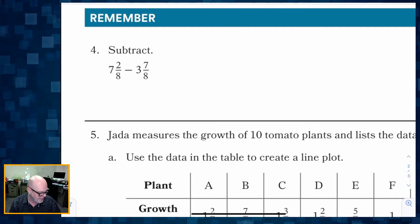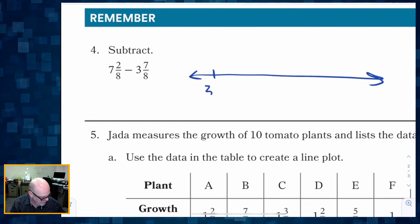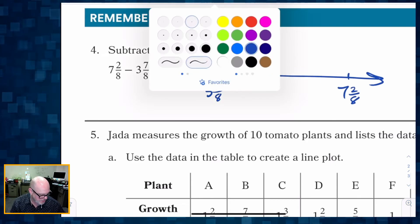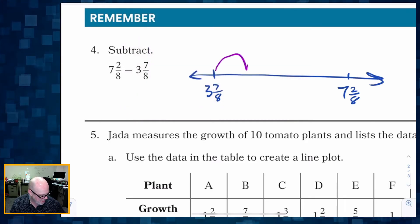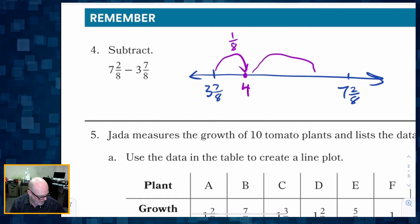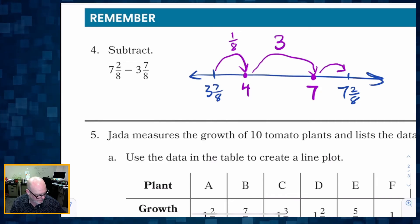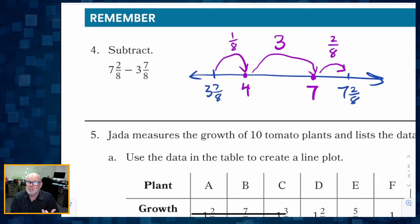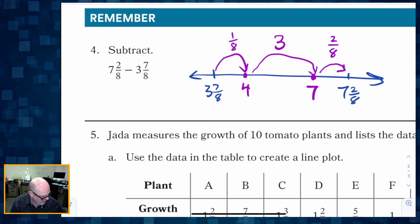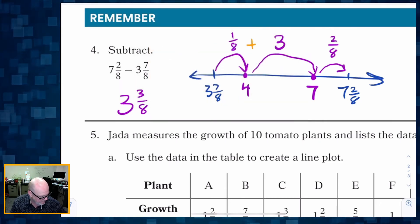Now some review: seven and two-eighths minus three and seven-eighths. I'm going to think of this as a number line. Starting at three and seven-eighths, I need to figure out what I have to add to reach seven and two-eighths. First, a hop of one-eighth gets me to four. Then a hop of three gets me to seven. Then a hop of two-eighths gets me to seven and two-eighths. Adding it all up: one-eighth plus three plus two-eighths equals three and three-eighths.